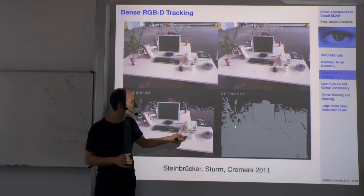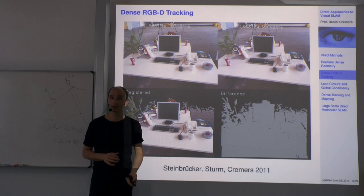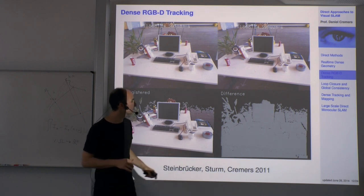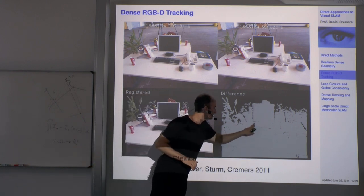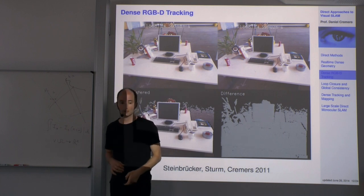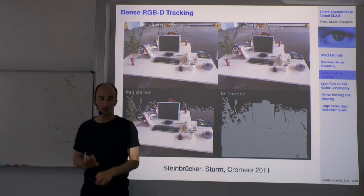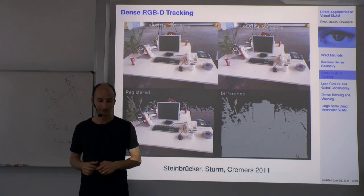Here you can see two color images. We try to find a camera motion that perfectly aligns them. The second image registered to the first shows a fairly nice reconstruction of the scene, apart from edges where self-occlusions occur.